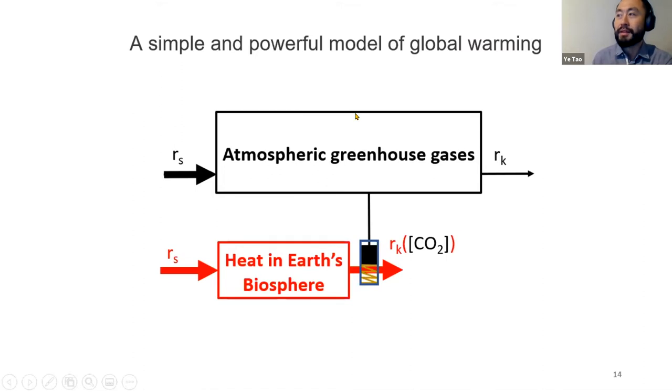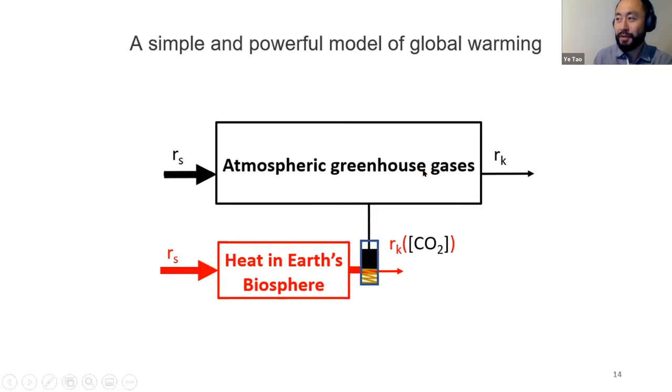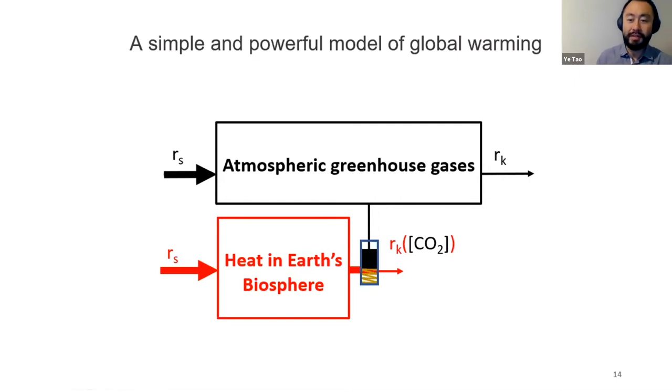We don't need to worry about the specific coupling between greenhouse gas concentration and the sink rate of infrared radiation from Earth, but suffice it to say it's equivalent to a spring-loaded valve. A larger node will compress the spring valve and reduce the rate at which infrared radiation can escape. Now we have an unbalanced source and sink rate, leading to a growth of the size of this node—basically overheating on planet Earth. That's a very simple diagrammatic depiction of what's happening on Earth.